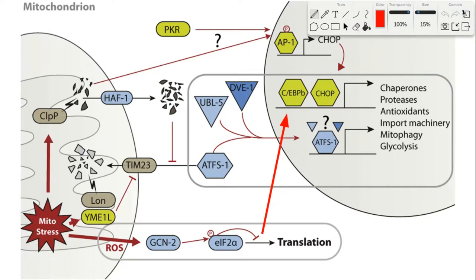The UPR is basically a strategy to deal with accumulated misfolded proteins. Specifically, UPR signaling leads to the upregulation of proteases and various folding chaperones that restore protein homeostasis in the mitochondrion. The MT-UPR is thought of as being cytoprotective because it helps deliver homeostasis-restoring proteins back to the mitochondria. Research in worms suggests that chronic mitochondrial UPR activation extends lifespan, presumably by promoting the expression of cytoprotective proteins.